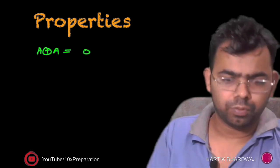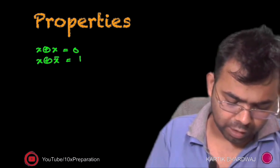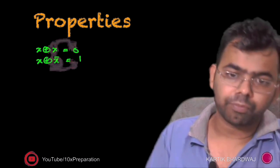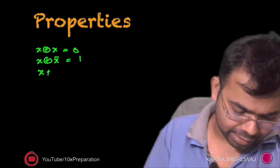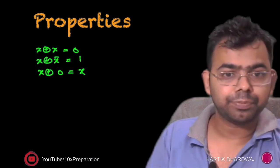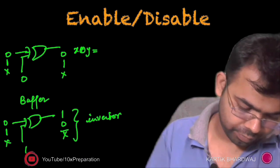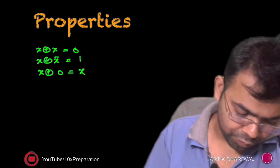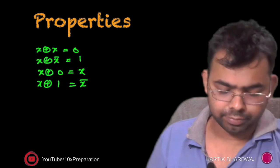Now come back to the properties. X XOR X = 0. X XOR X-bar = 1. X XOR 0 = X — this is the buffer property I already told you about. X XOR 1 = X-bar — again confirming the inverter property. These are the key properties of the XOR gate.